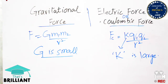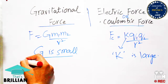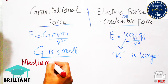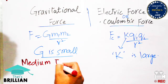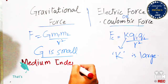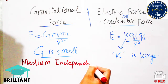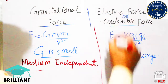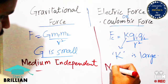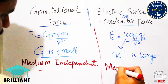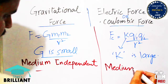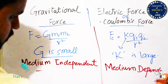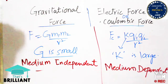Another difference is whether the force is medium dependent or medium independent. The gravitational force is medium independent, but the electric force or Coulomb force is medium dependent. This means that any medium placed between a mass and the earth does not affect the gravitational force — it remains the same.